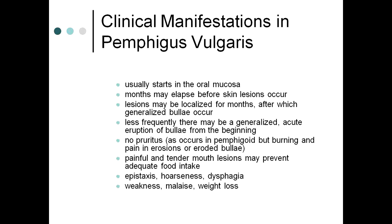Clinical manifestations of pemphigus vulgaris: it usually starts in the oral mucosa; months may elapse before skin lesions occur. Lesions may remain localized for months before generalized bullae develop. There is no pruritus — unlike pemphigoid. Patients present with painful, tender mouth lesions that may prevent adequate food intake. Epistaxis, hoarseness, dysphagia, weakness, malaise, and weight loss are also possible.